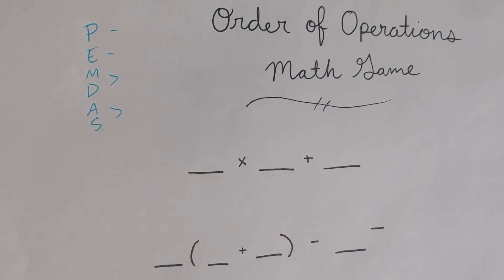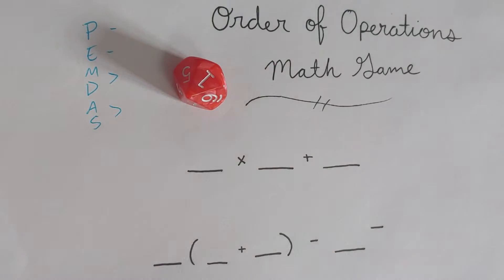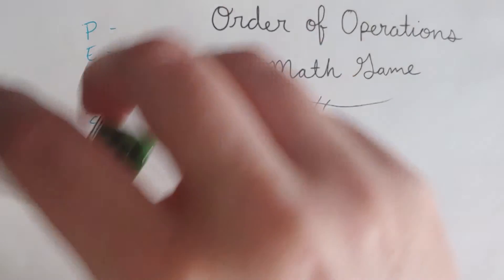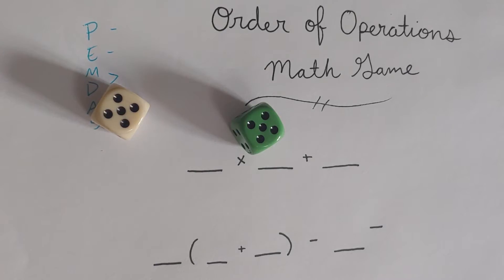But if you have heard of it, here's a cool way to practice it. For this you are going to need some dice. If you have ten-sided dice, go for those because it will give you more choices of numbers to roll with. If you don't, just use the six-sided ones that you probably have in a bunch of random games around your house like Monopoly or Sorry.